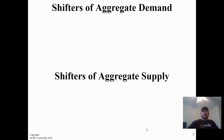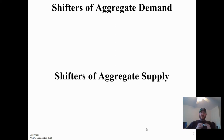First I want to recap the shifters of aggregate demand and aggregate supply. We know that aggregate demand is everything that makes up GDP — consumer spending, investment spending, government spending, and net exports. If any of those components are impacted, that is 100% going to be aggregate demand related.